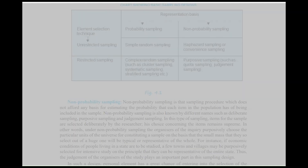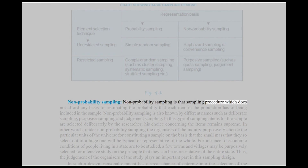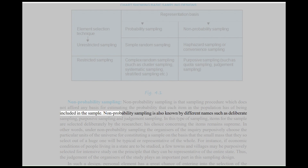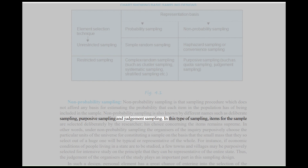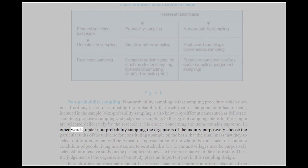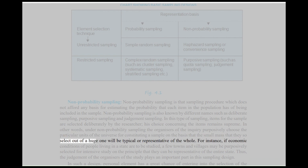Non-probability sampling: Non-probability sampling is that sampling procedure which does not afford any basis for estimating the probability that each item in the population has of being included in the sample. Non-probability sampling is also known by different names such as deliberate sampling, purposive sampling, and judgment sampling. In this type of sampling, items for the sample are selected deliberately by the researcher — his choice concerning the items remains supreme. Under non-probability sampling, the organizers of the inquiry purposively choose the particular units of the universe for constituting a sample on the basis that the small mass they select will be typical or representative of the whole.